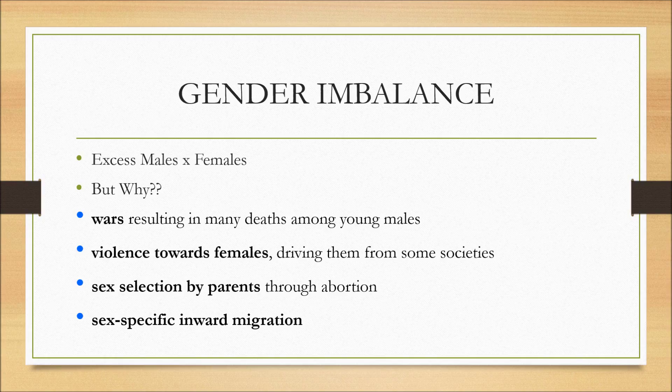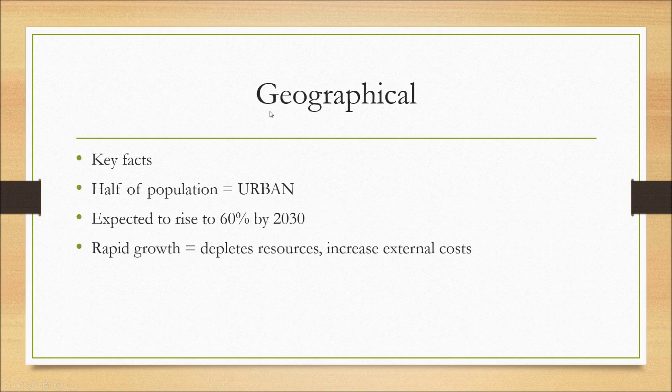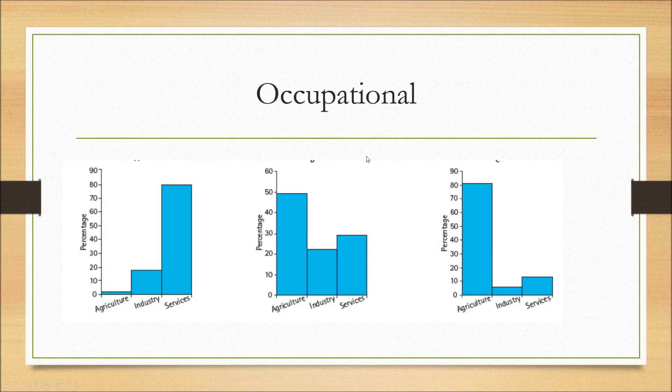Second last one is the geographical distribution. This is meant by basically where people live. Some key facts, half of the population in the world live in urban areas and this is expected to rise to 60 percent by 2030. And these rapid growth they might deplete resources and increase external costs such as congestion and pollution.